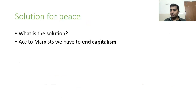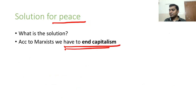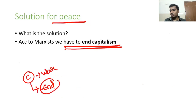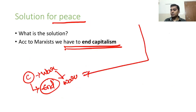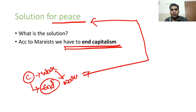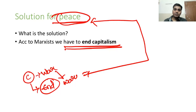The First World War was a war for colonies. From this theory, Lenin wants to say that the real cause behind the war was capitalism. Realists and liberals are confusing us by saying that war is because of anarchy — but no, this is due to capitalism. That is the difference between the other schools and the Marxist school. If you want peace, end capitalism, because capitalism is the root for war.